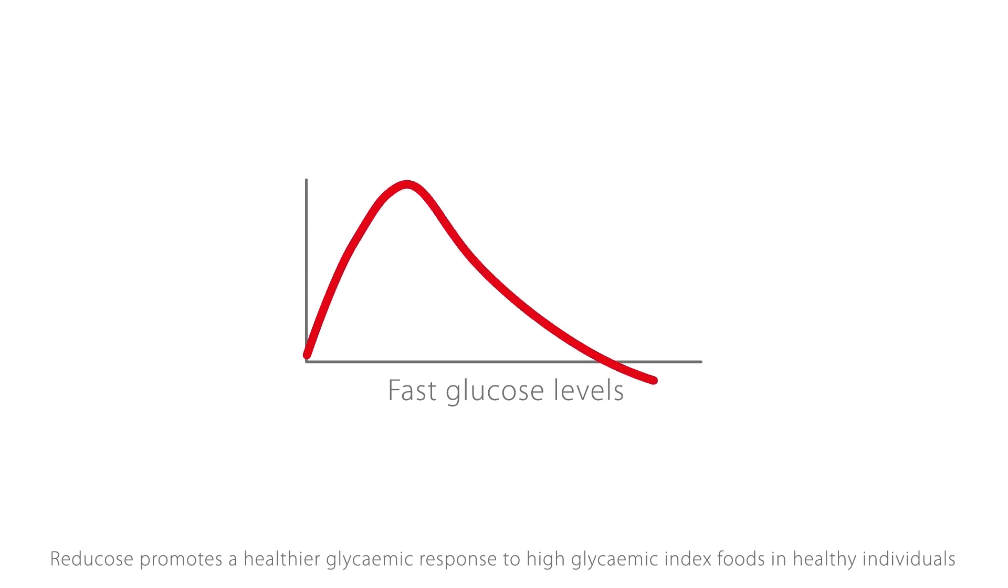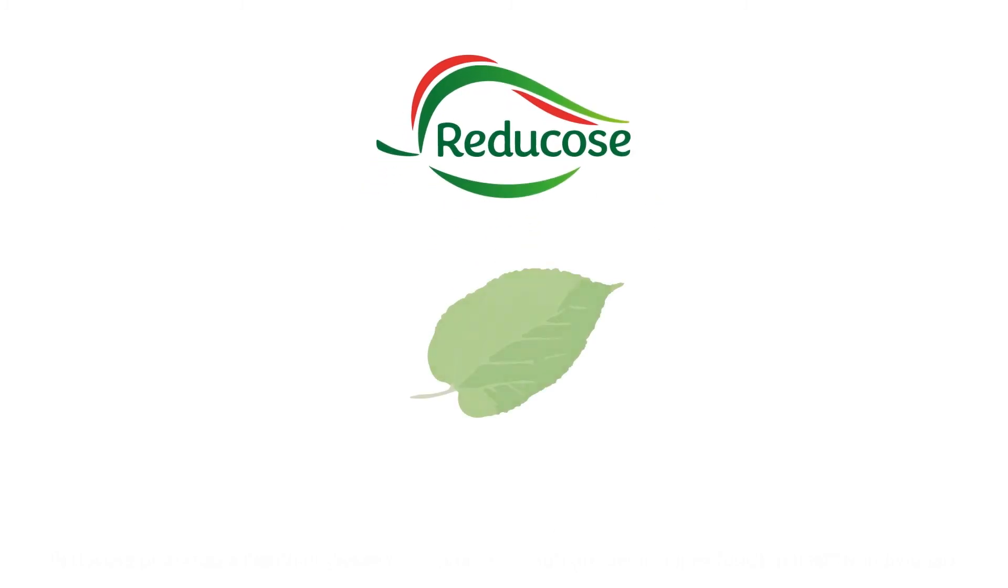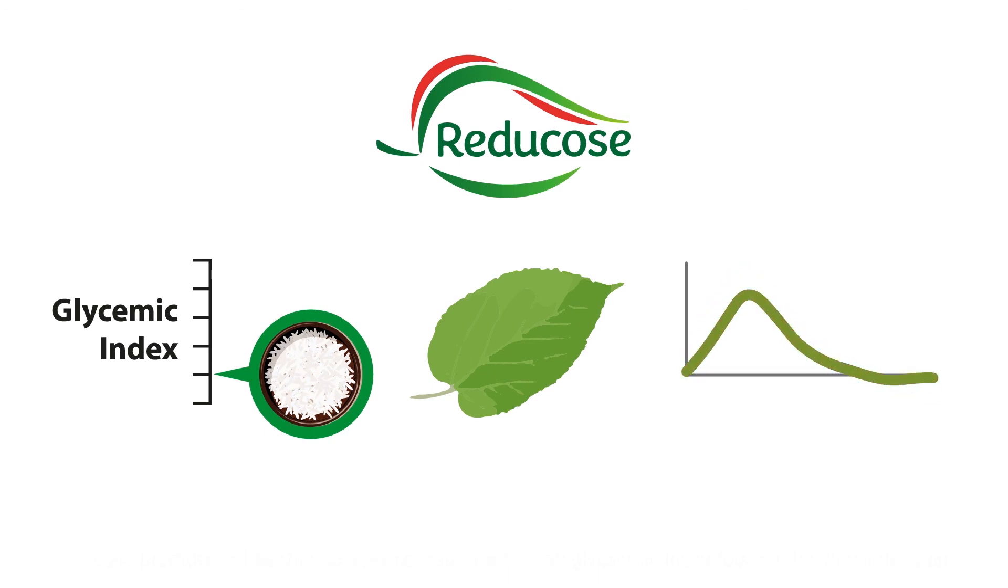For consumers concerned about fast and high blood glucose, Reducose is a completely safe and natural solution. It reduces the glycemic index of the foods you eat by making carbohydrate digestion significantly lower and slower and keeps you in a balanced blood glucose and insulin zone.